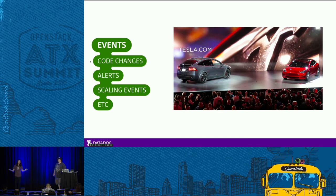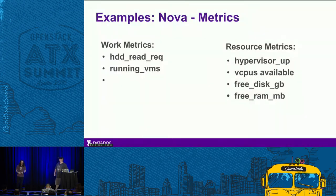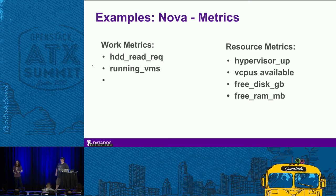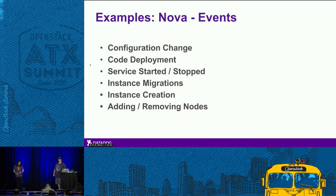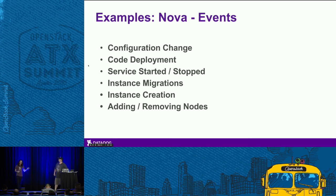Here's an example of overlaying events on a graph — IO usage in the cluster, with those pink bars representing events where we added or removed nodes from the cluster, and you can see how that impacted IO. For Nova specifically: work metrics are the number of VMs running at a given time, the ability to create and spin up or shut down VMs, IO performance, network performance. Resource metrics are hypervisor availability and usability, vCPU count, RAM and disk utilization. Events are upgrades, code deployments, auto-scaling events, instance migrations, adding and removing nodes.